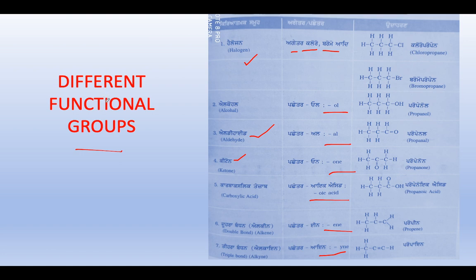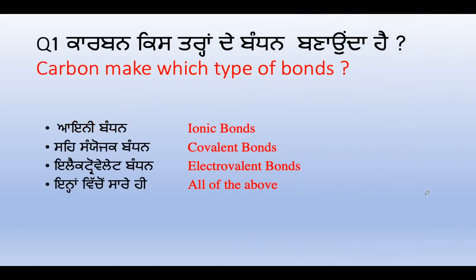Nomenclature is covered in a very good video available in the Punjab 10th section. You will find everything related to nomenclature — the naming rules. For example: chloro gives 1,2,3-propane; bromopropane; alcohol gives propanol; aldehyde gives propanal; ketone gives propanone; carboxylic acid gives propanoic acid. Please read the nomenclature video for this. Nomenclature will be clear and then we will do multiple choice.